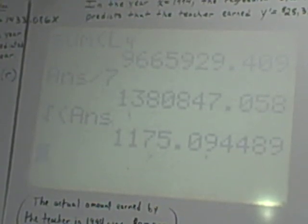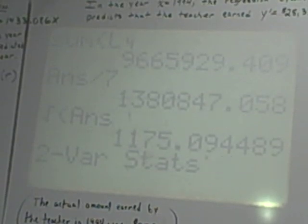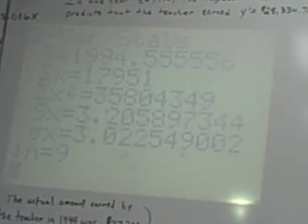I'll show 2 variable statistics, because that's what we did in the last video. So push stat, go over to the calculate menu, and choice 2 is 2 variable statistics. You could use 1 variable statistics, because we're only really needing data on the x-values, but either one will work. If your stuff's in list 1 and list 2, you can just hit enter. And you can see there's your x-bar, 1,994.555, your sum of your x's, and your sum of your x-squares, which I already have all plugged into the formula.